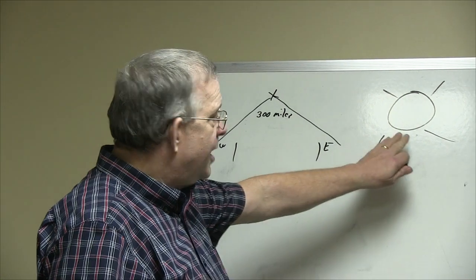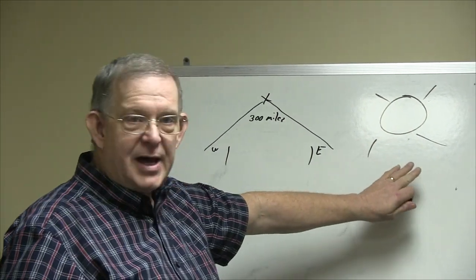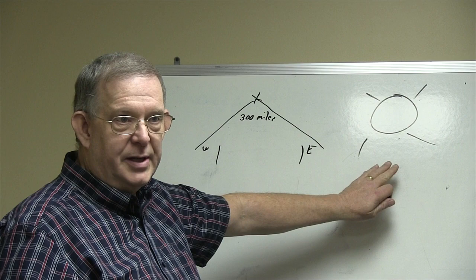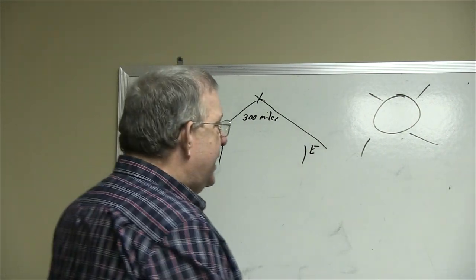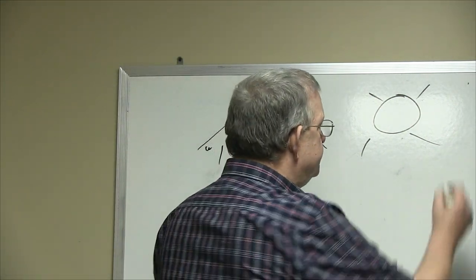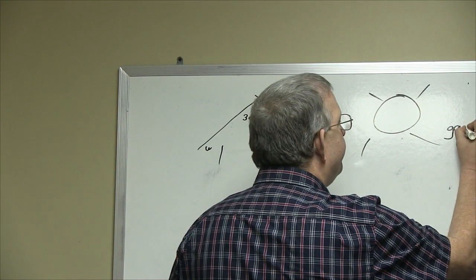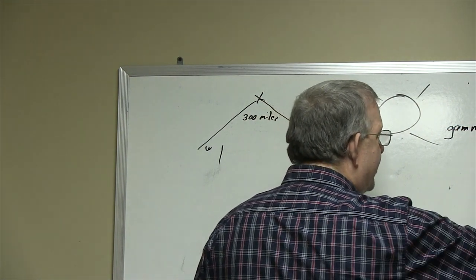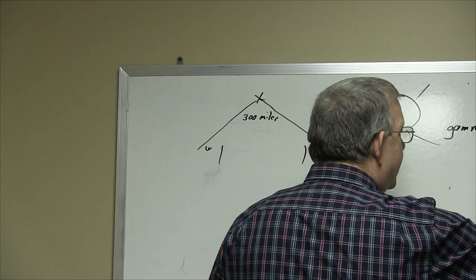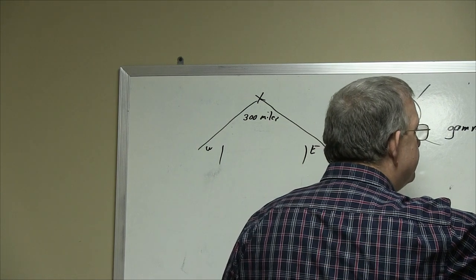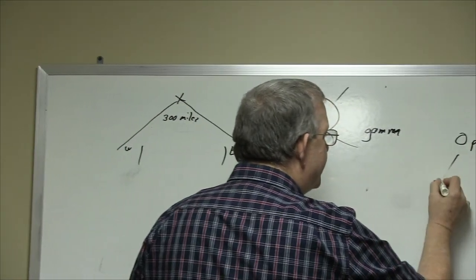When an atomic bomb goes off, and it doesn't have to be big, it gives off gamma rays which hit the protons, which give off an electron.